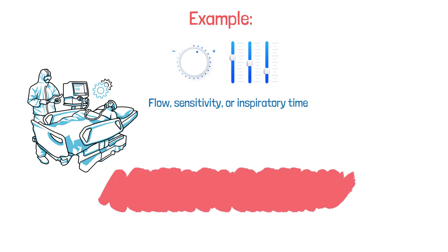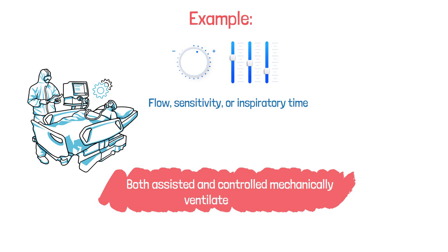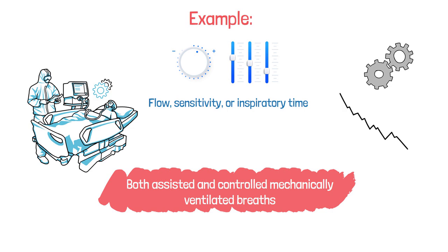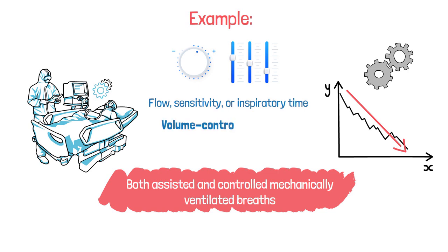Patient-ventilator asynchrony can occur in both assisted and controlled ventilatory breaths. In general, the less control the ventilator has over the patient's respiratory pattern, the less likely they will experience asynchrony. Volume-controlled ventilation typically results in more cases of dyssynchrony because it controls volume, flow, and time.